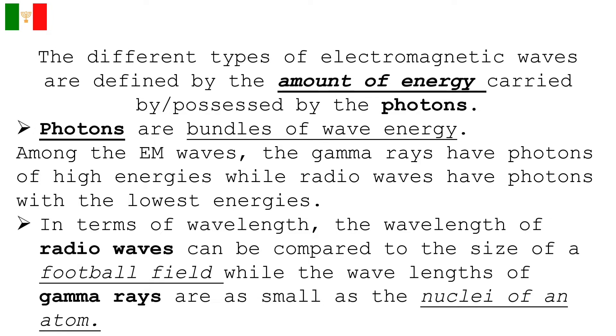With regard to the wavelength properties, radio waves can be likened to the size of a football field while gamma rays are as small as the nuclei of an atom. Gamma rays, x-rays, and high ultraviolet are classified as ionizing radiation as their photons have enough energy to ionize atoms. It causes chemical reactions.